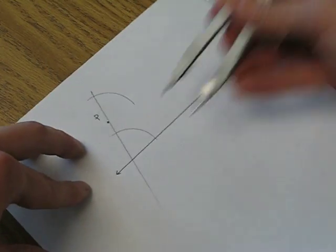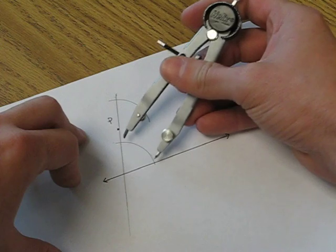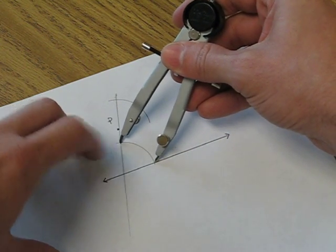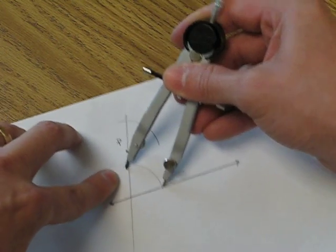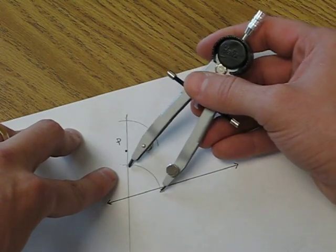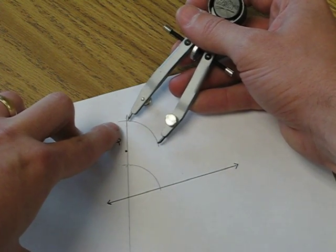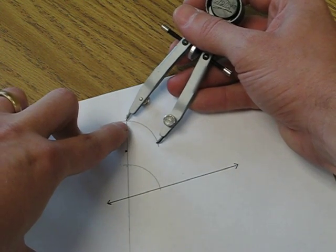Second, the next step would be to measure the arc length, the measure of our angle here, and transfer it. Alright, now you may have to flip your compass depending on where the point is. The metal tip should be here where the transversal passes through the arc.